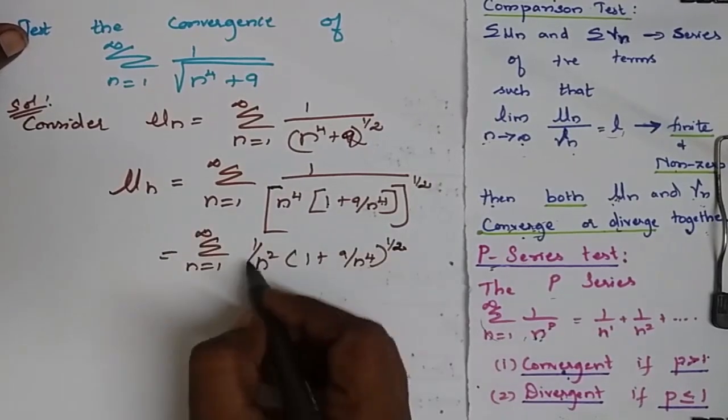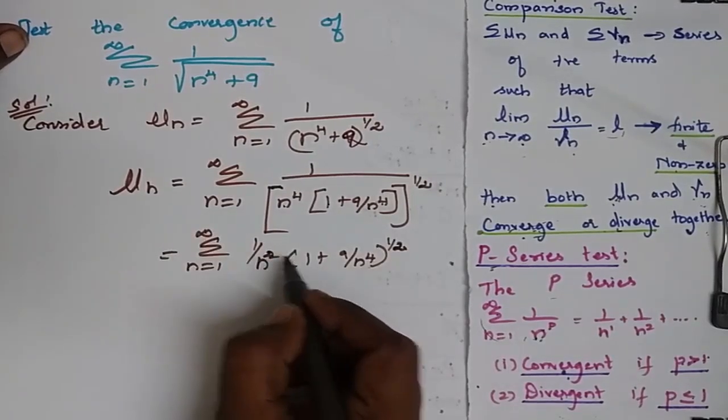So further when I simplify, this is 4 into 1 by 2. So I will get n squared.